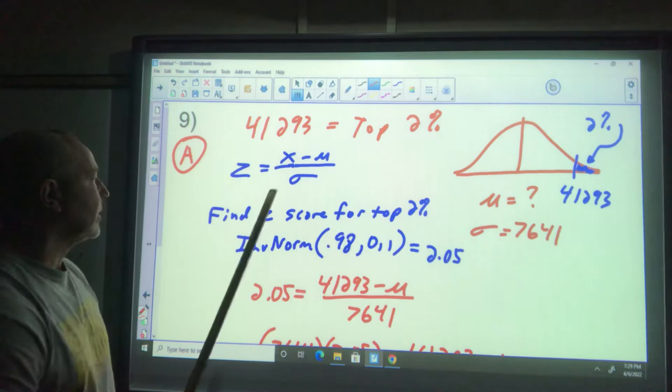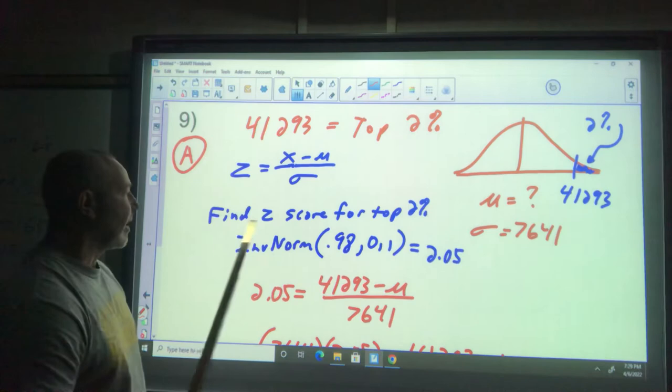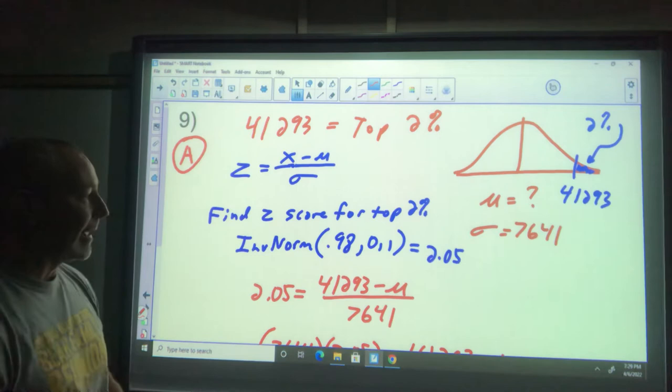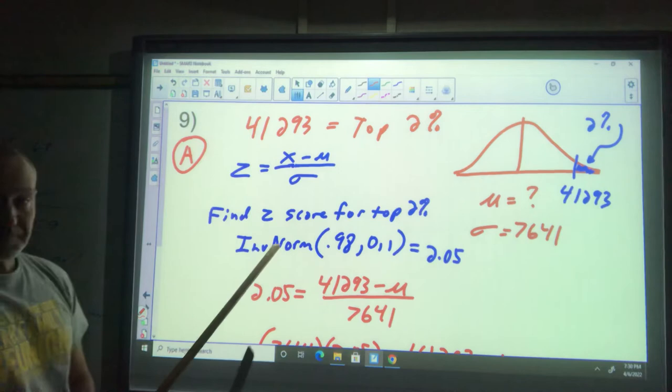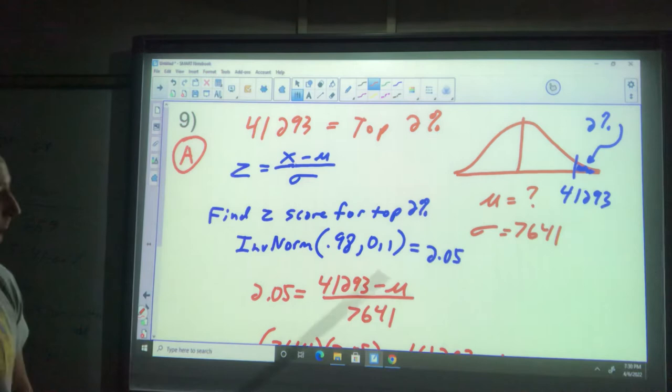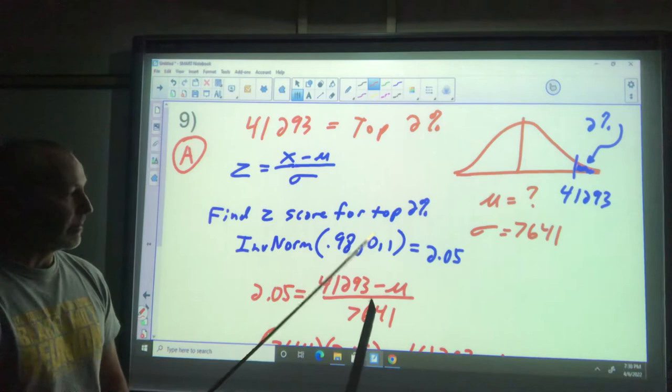I'll use z-scores to figure this out. First, find the z-score for the top 2 percent on a z distribution. Go to inverse norm - you have to put in the area to the left, which is 0.98 (98 percent below). The mean is zero and standard deviation one. That gives a z-score of 2.05.